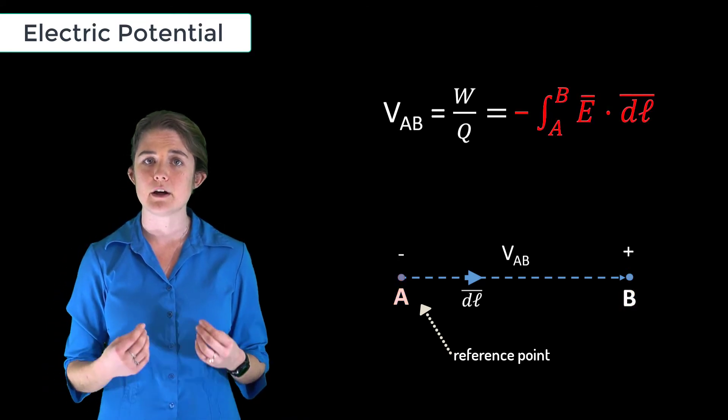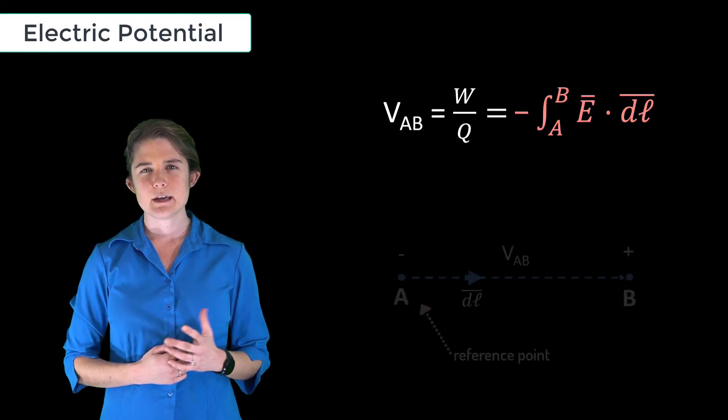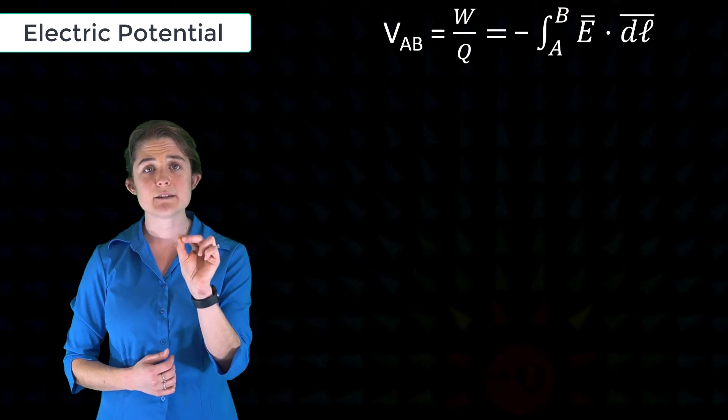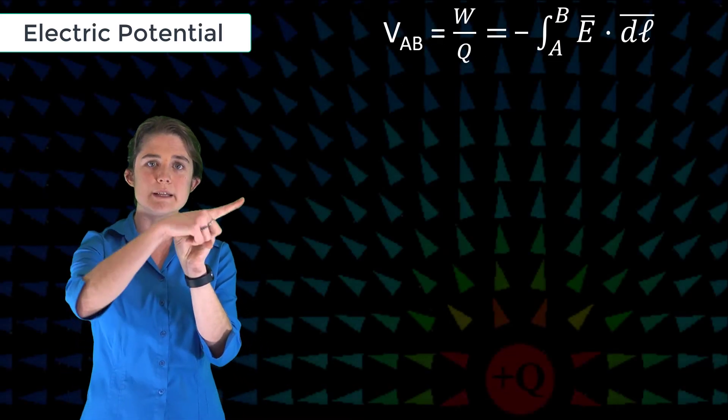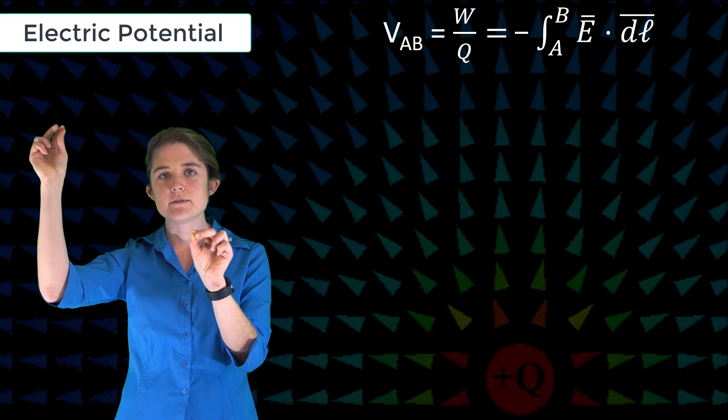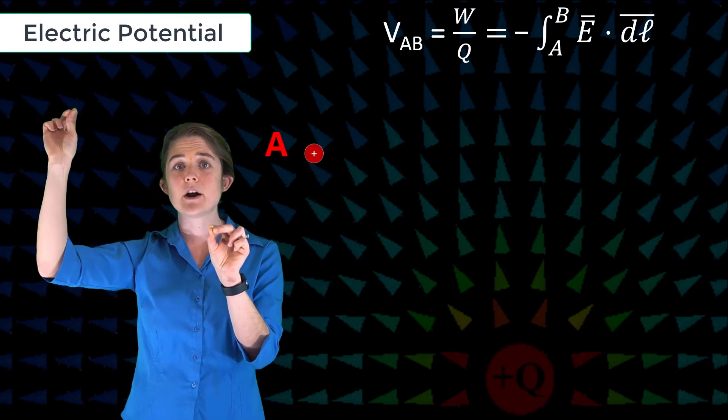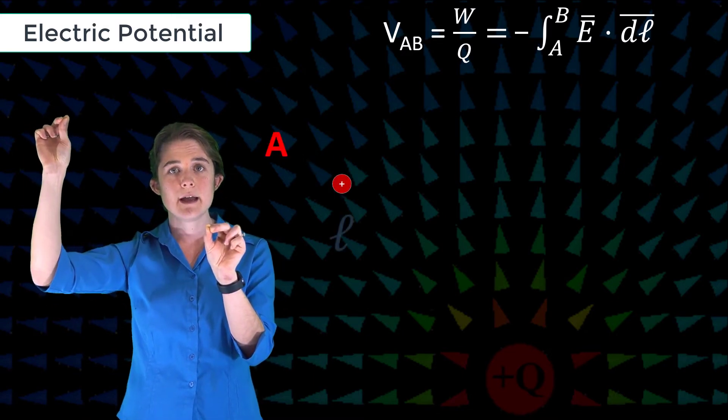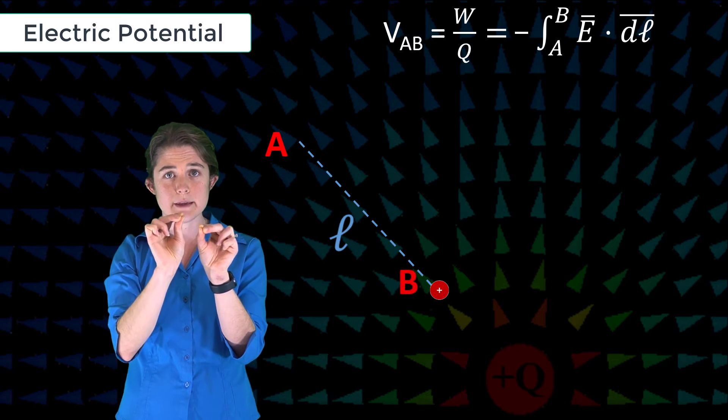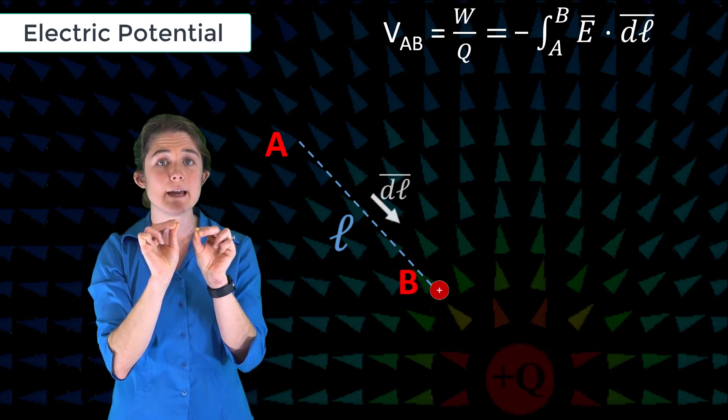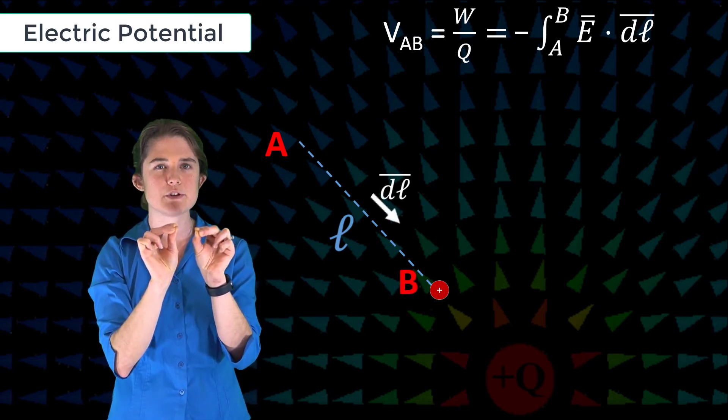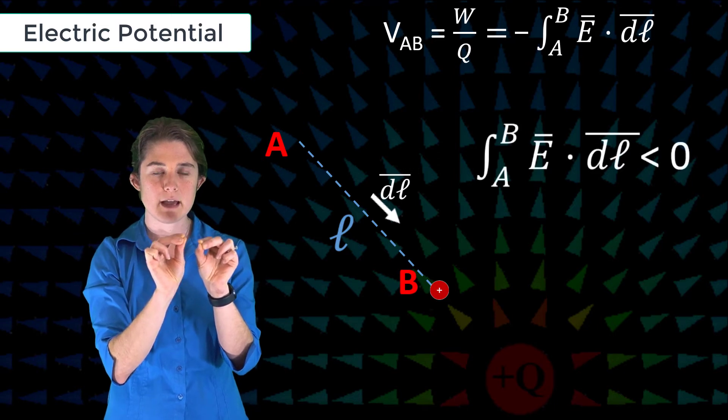Imagine this: you have a positive charge with its outward-pointing electric field. If you have a second positive test charge far from the first at point A, and you bring it near to point B, you'll be moving it against the electric field. So the integral will be negative and the measured voltage will be positive.